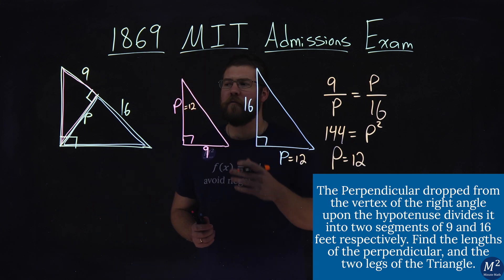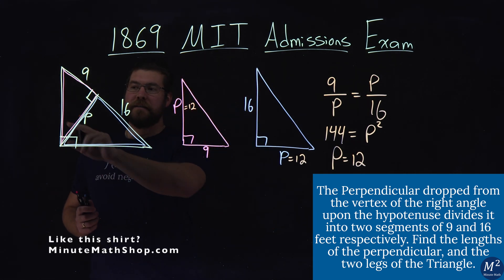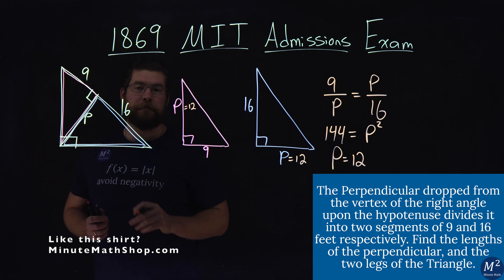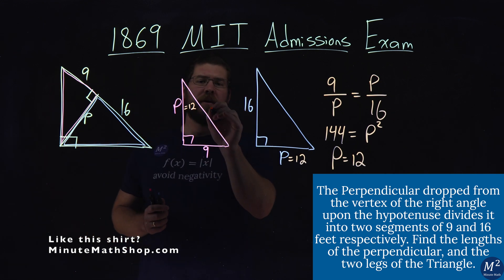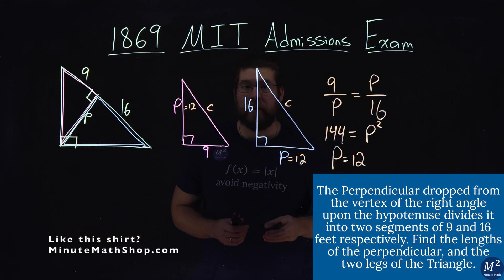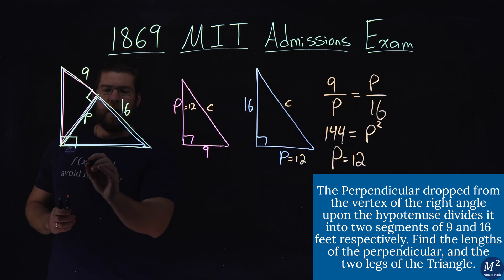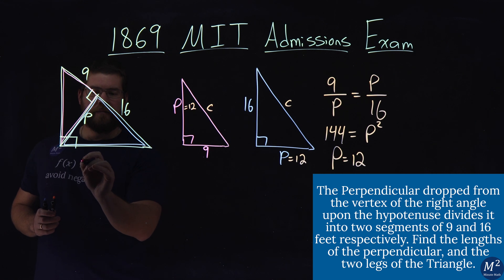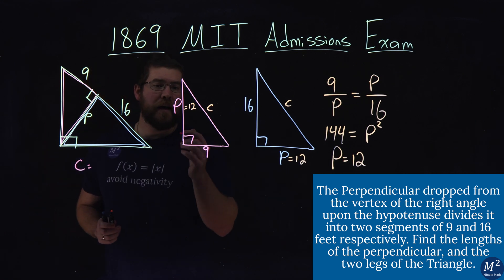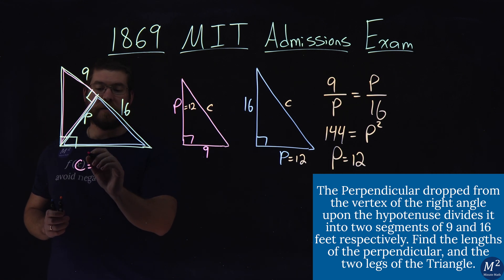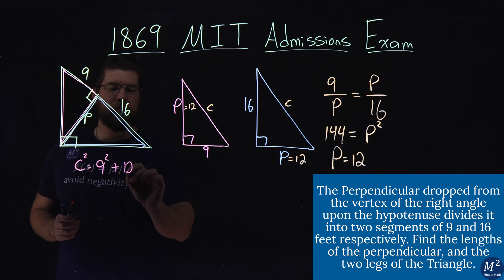So we found a length here of p is 12 for both of them. But we want to find the other parts, these missing parts right here. And to do that, well, we have to write a squared plus b squared equals c squared, we use the Pythagorean theorem. So for this first one in pink here, let's go to that c value here, the hypotenuse, the c value is going to equal to that c squared is equal to that 9 squared plus 12 squared.